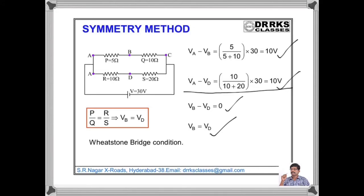That is, when P by Q equals R by S, the potential at point B equals the potential at point D. Even if you connect a resistance between B and D, there is no current flowing through it. This condition — that P by Q equals R by S and the potential at B equals the potential at D — is called the Wheatstone bridge condition.